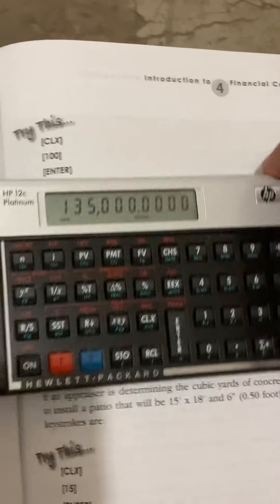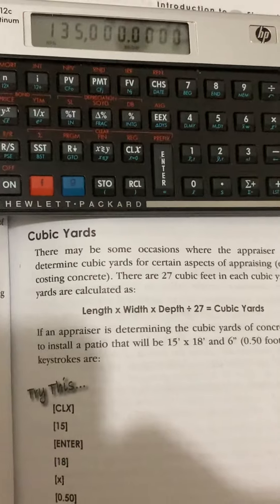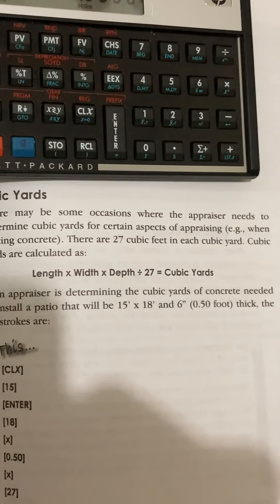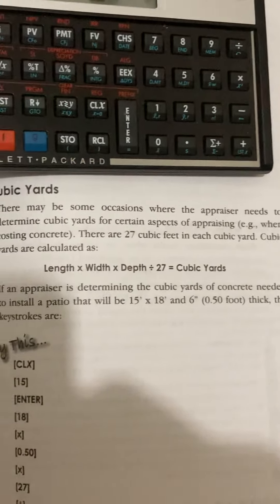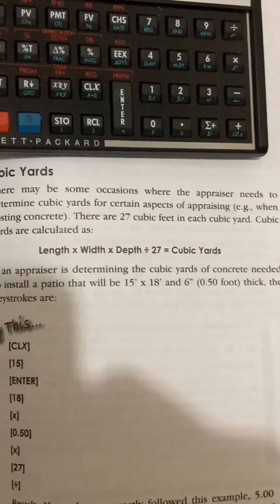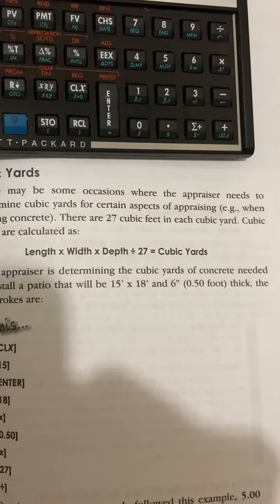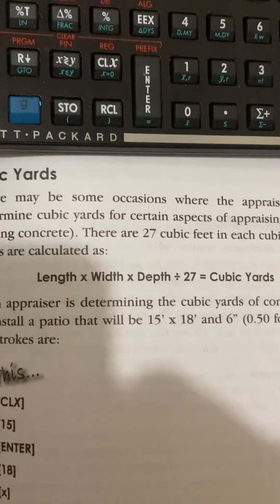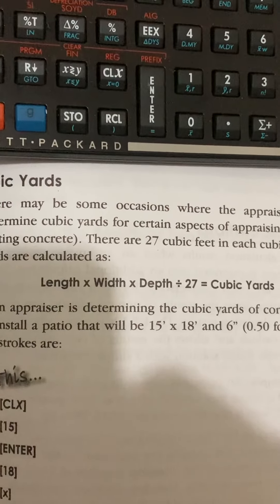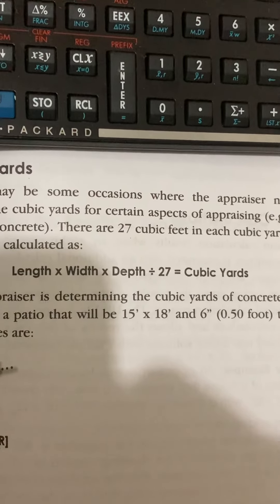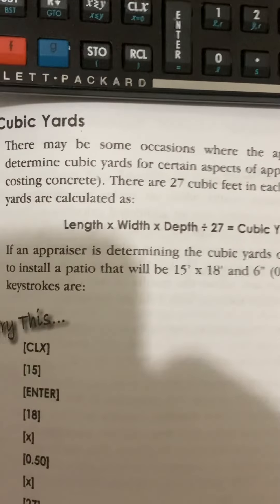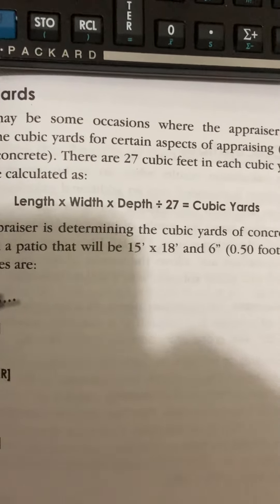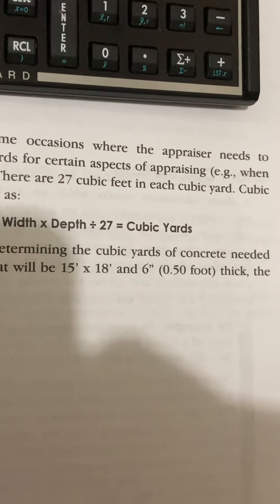Let's do cubic yards. There may be occasions where the appraiser needs to determine cubic yards — for instance, when costing concrete. There are 27 cubic feet in each cubic yard. Cubic yards are calculated as length times width times depth divided by 27 equals cubic yards. If an appraiser is determining the cubic yards of concrete needed to install a patio that will be 15 feet by 18 feet and six inches thick...